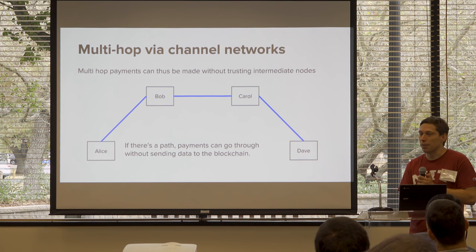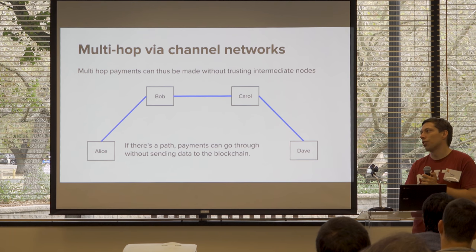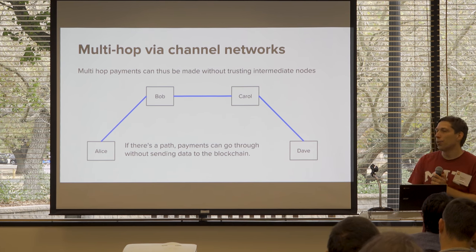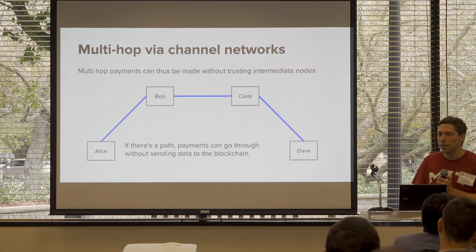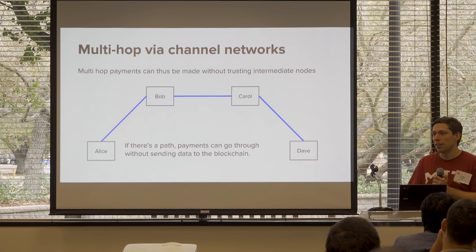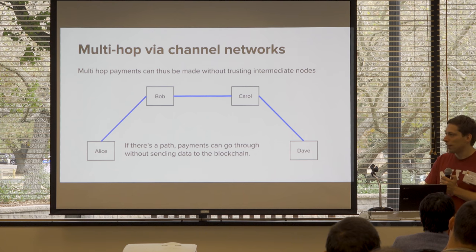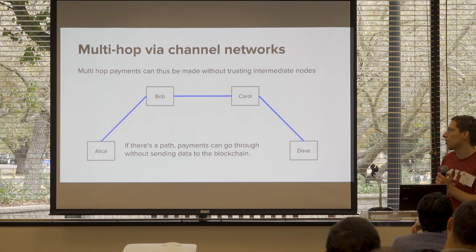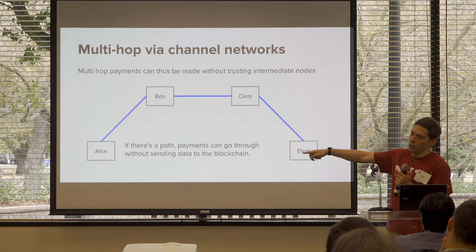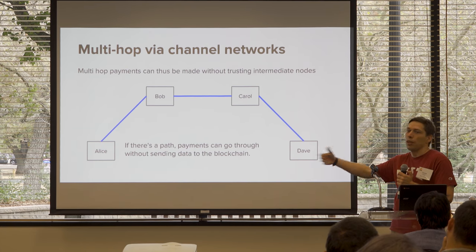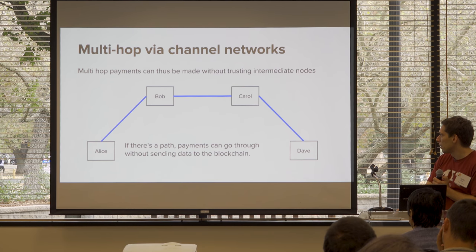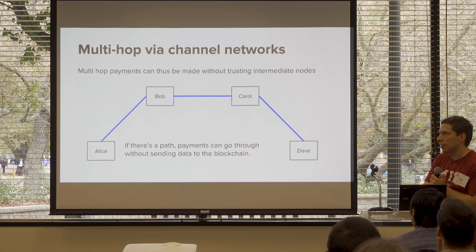There's all sorts of asterisks around path finding and balancing things out. You never want most of the money to get on one side of the channel, because then you can attack the channel — you can broadcast a state where you had a lot more money. Basically if Alice has zero funds in the channel, there's nothing at stake for her, so why not try to close it fraudulently?